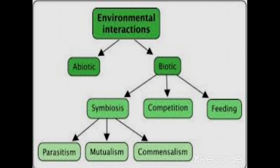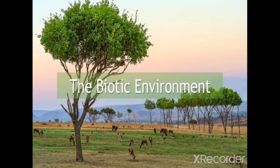In the biotic environment, there are mainly three types of relationships which organisms form: parasitism, mutualism, and commensalism. The most common interaction between organisms involves food.